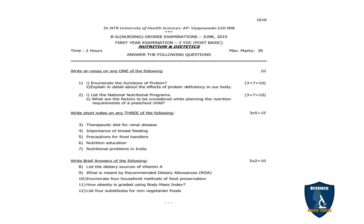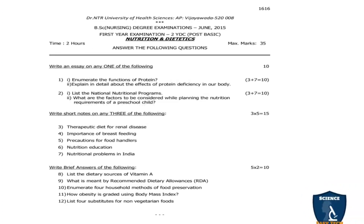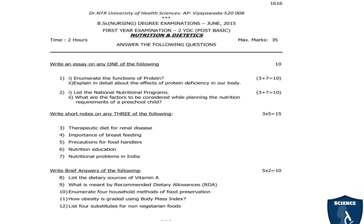Next is the June 2015 question paper. First question 1A: Enumerate the functions of protein — 3 marks. 1B: Explain in detail about the effects of protein deficiency in our body — 7 marks. 3 + 7 = 10 marks. Second question 2A: List the national nutritional programs — 3 marks. 2B: What are the factors to be considered while planning the nutrition requirements of a preschool child? — 7 marks. Total: 10 marks. Short notes, any 3 of 5: therapeutic diet for renal disease; importance of breastfeeding; precautions for food handlers; nutrition education; nutritional problems in India.